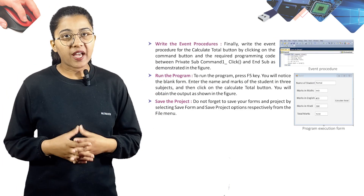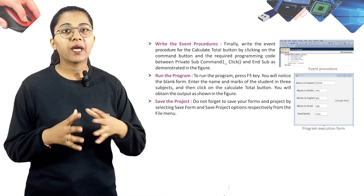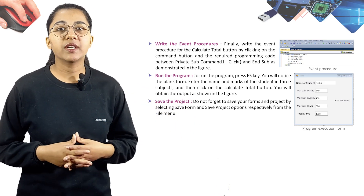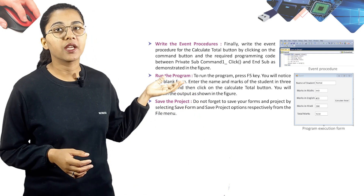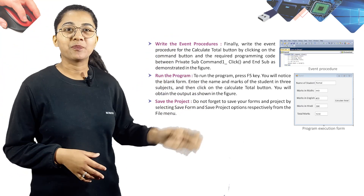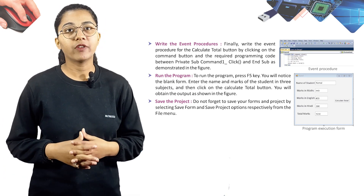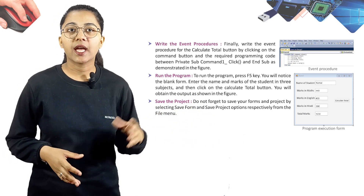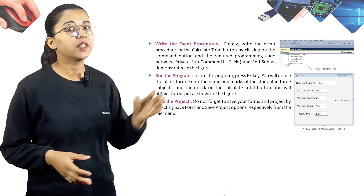Step 3: Write the Event Procedure for the Calculate Total button by clicking on the command button and entering the required programming code between Private Sub Command1_Click and End Sub. To run the program, press F5. You will see a blank form; enter the name and marks of the student in three subjects, then click the Calculate Total button to obtain the output.